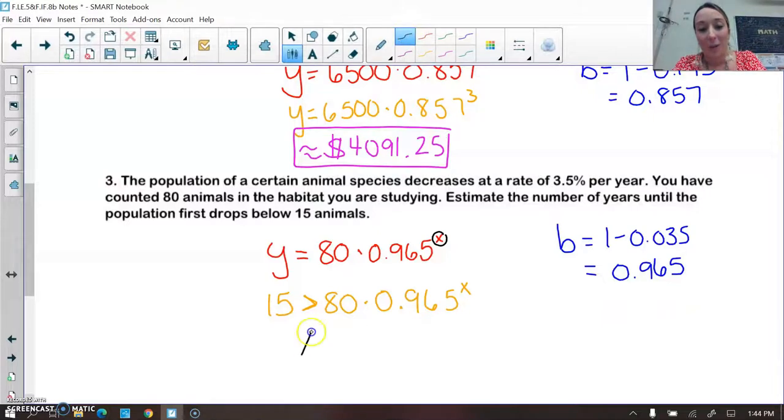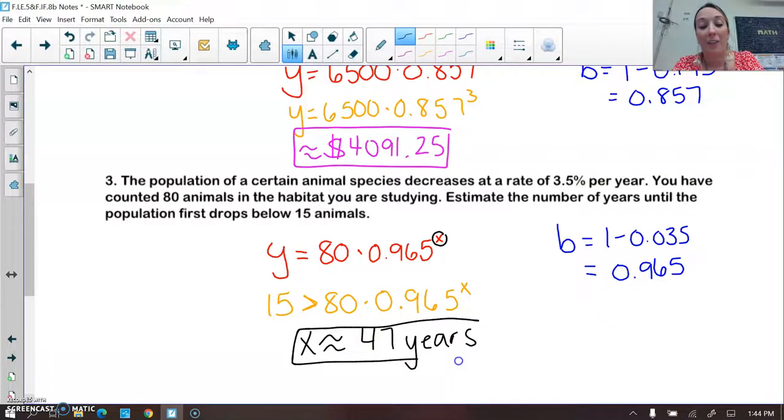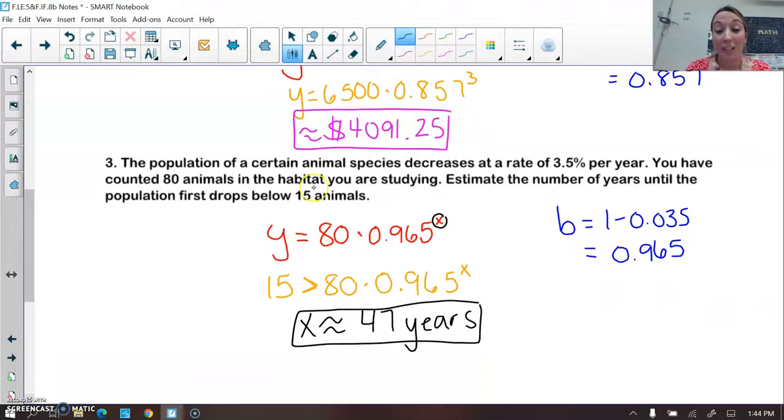Years. So we're going to write that it took approximately 47 years for the population to drop just below 15. That was quite mean on that problem making you do that 47 times. But that's how we would do a problem like this. We would just use our calculator to do some guess and check. All right, that's it for this lesson.